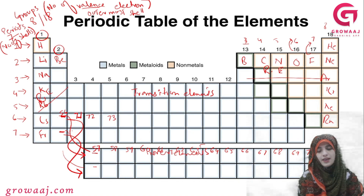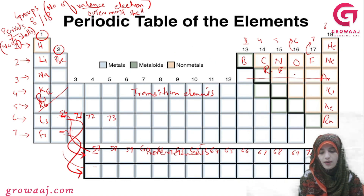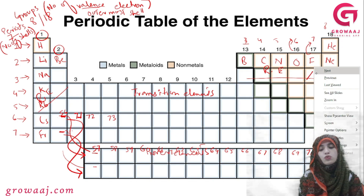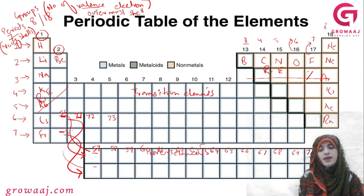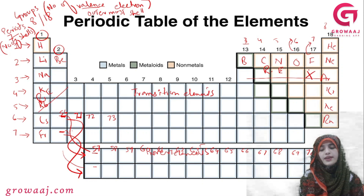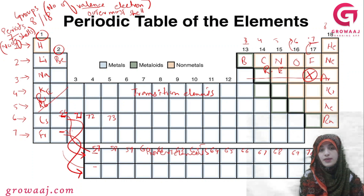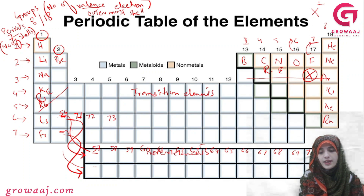How do we do that? Let's talk about any element here. What is the name of this element? X. Now let's talk about this element. Which group does it belong to? The 7th group. It means it has 7 valence electrons, because it belongs to the 7th group.